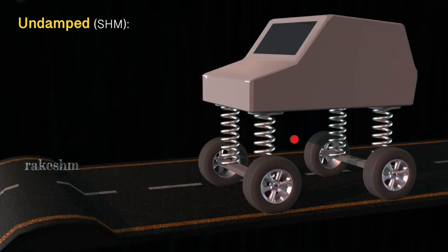I have a car here which I have modeled. I have exaggerated the springs so that you can see the oscillations clearly. We will now move this car over a speed breaker and see what happens when we have only springs which are fixed to the car. So let us have a look.